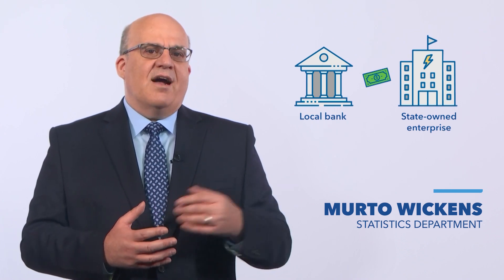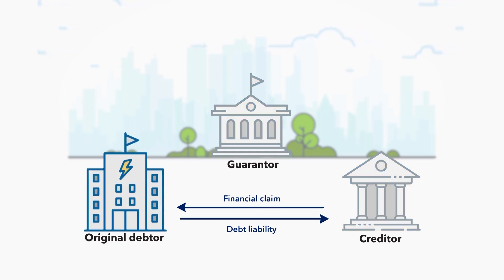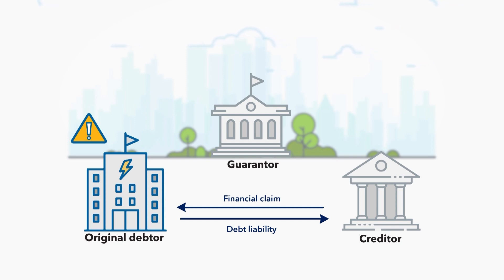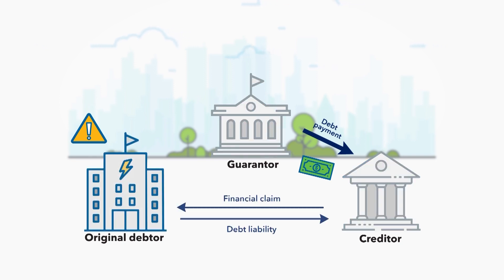Let's say a state-owned enterprise borrowed $100 from a local bank. This loan is guaranteed by the central government. At some point later, the state-owned enterprise is unable to repay an installment of this debt because it has a temporary cash flow problem. Under the terms of the guarantee, the central government then pays this one installment on behalf of the state-owned enterprise. In this case, the financial relationship between the state-owned enterprise and the local bank remains the same.